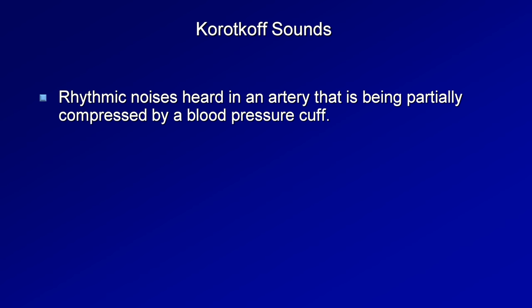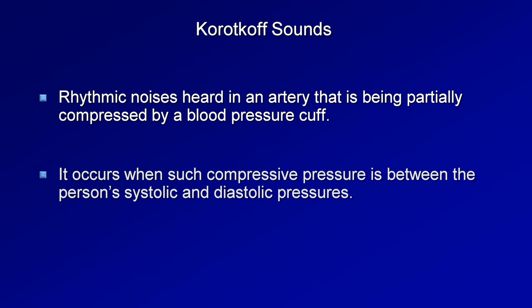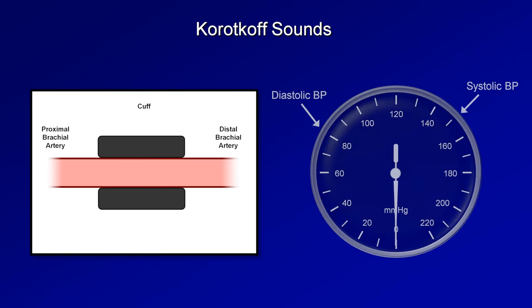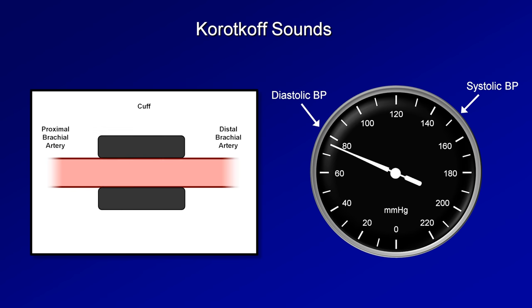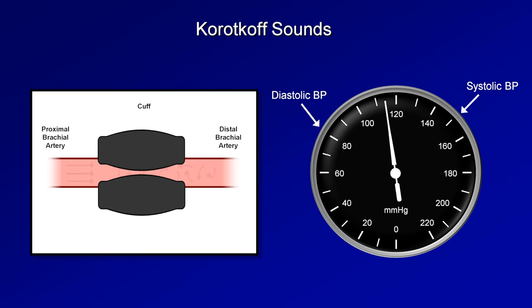Before we get to the actual procedure of measuring blood pressure, there are two phenomena of which you need to be aware: the Korotkoff sounds and the auscultatory gap. The Korotkoff sounds are rhythmic noises heard using a stethoscope that are produced by turbulent blood flow in an artery — usually the brachial artery — that is being partially compressed by a blood pressure cuff. It occurs when the compressive pressure is between the person's systolic and diastolic pressures. At pressures higher than systolic, blood flow is cut off altogether, and at pressures lower than diastolic, there is no compression of the artery at any point in the cardiac cycle. But when the pressure is in between the systolic and diastolic, the artery alternates between compressed and open, creating turbulence and the Korotkoff sounds.